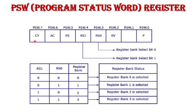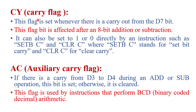Now I'll explain the function of the four conditional flag register bits: Carry Flag, Auxiliary Carry Flag, Overflow Flag, and Parity Flag. The Carry Flag bit is set whenever a carry is generated in any arithmetic operation — specifically whenever carry is generated from the D7 bit. This flag bit is affected after an 8-bit addition or subtraction. It can also be set to 1 or 0 directly using the SETB C instruction (set bit carry) or CLR C instruction (clear carry).